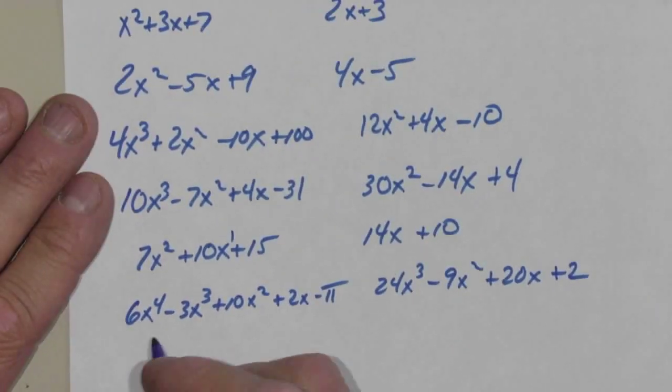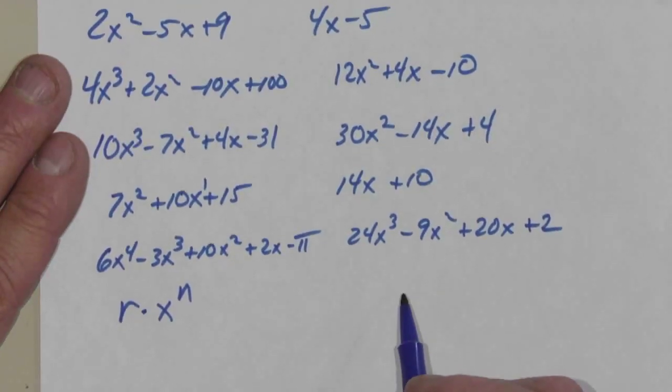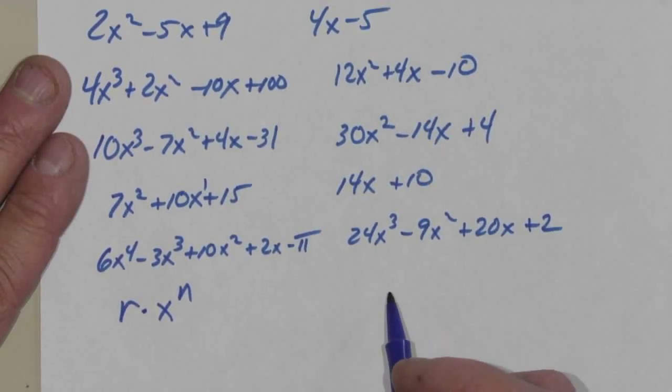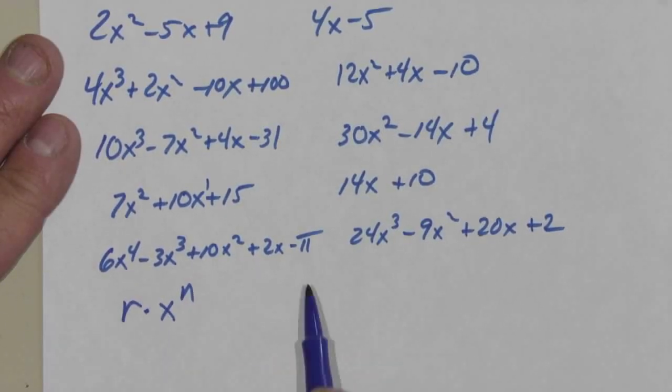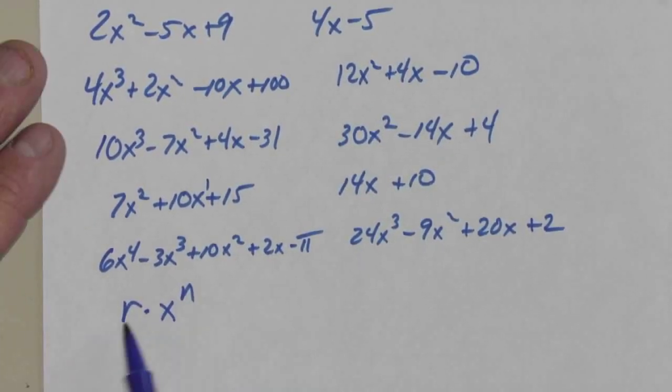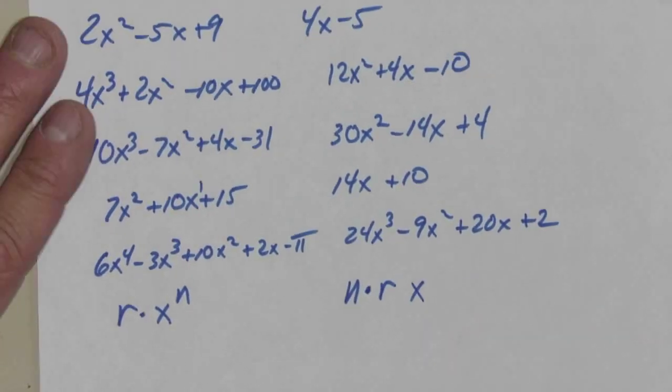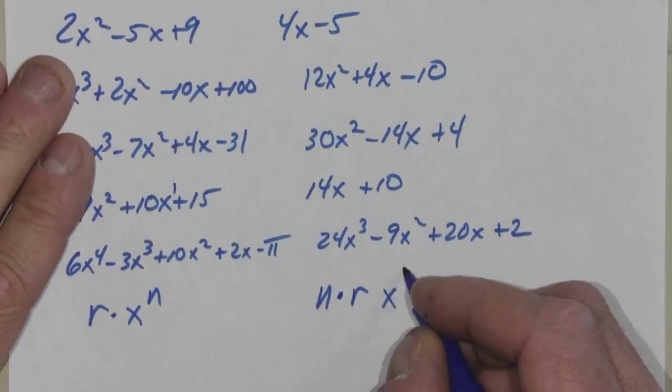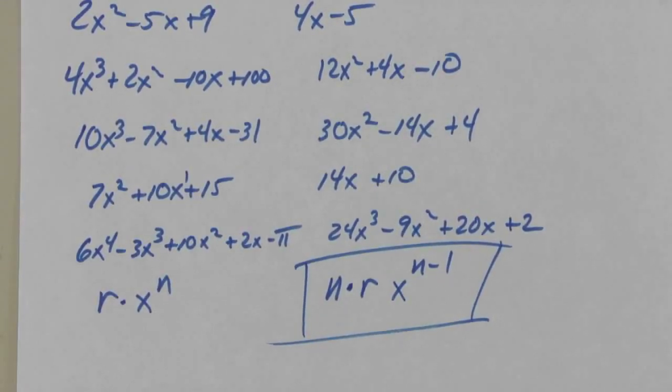It's like the power rule. If I have r times x to the n, you guys tell me, what's my derivative? Just follow your rules. So now we just got to do it in terms of variables. You just did it. And. So what would I write here? R times n or n times r? X to the n minus one. That's the power rule. Degree times your coefficient. Drop your degree one. There's my derivative. Boom. Forever and always.